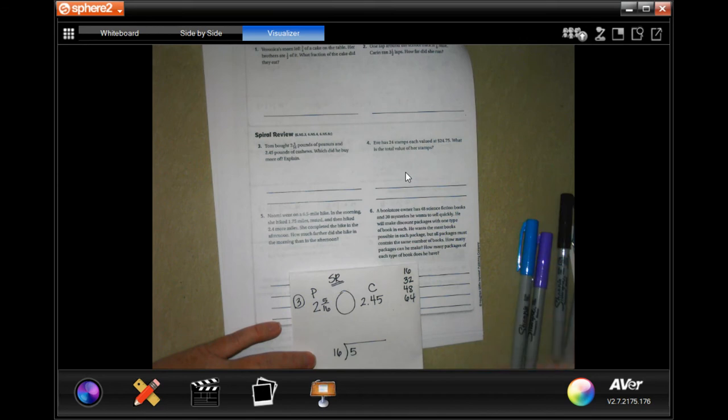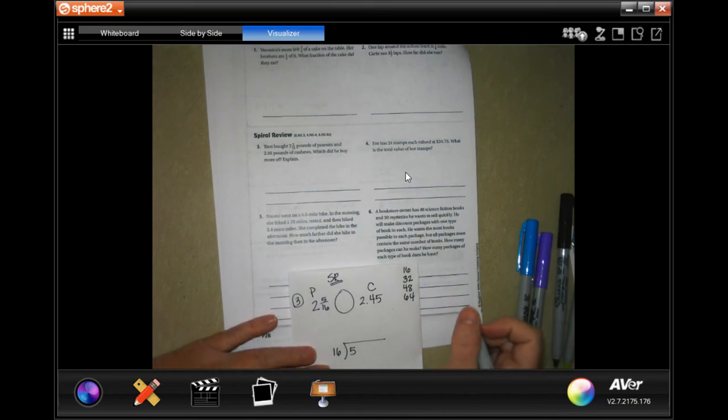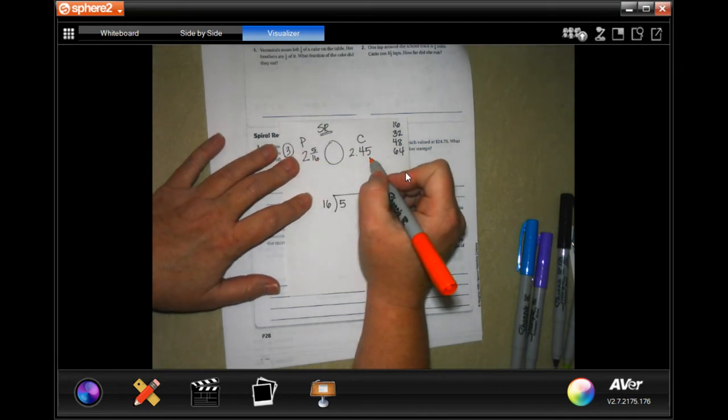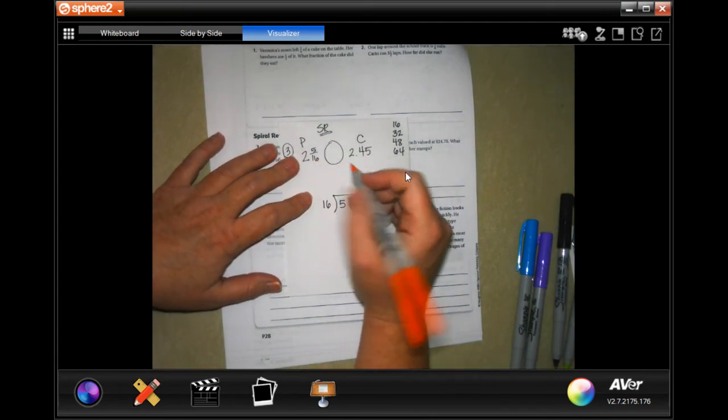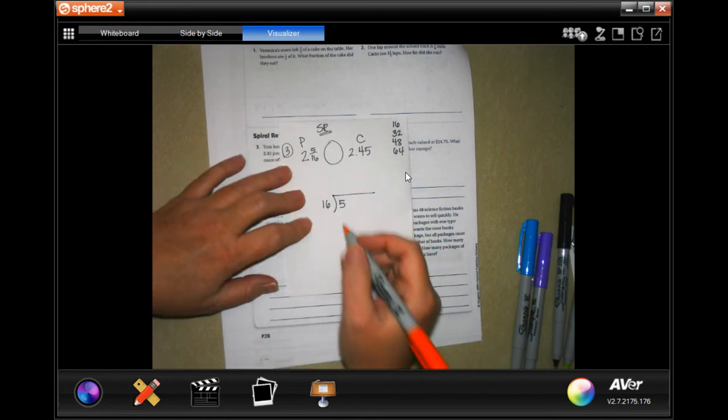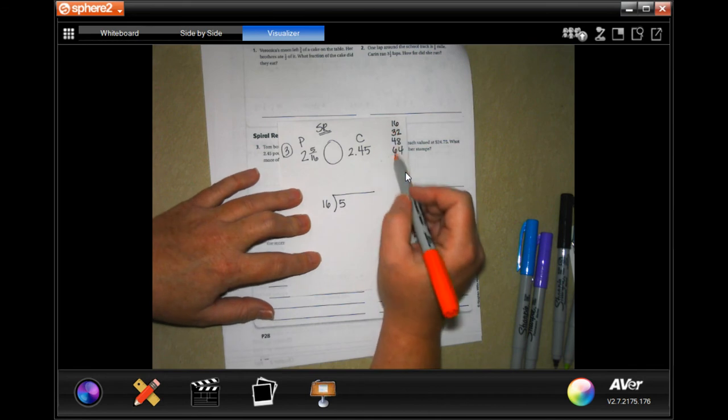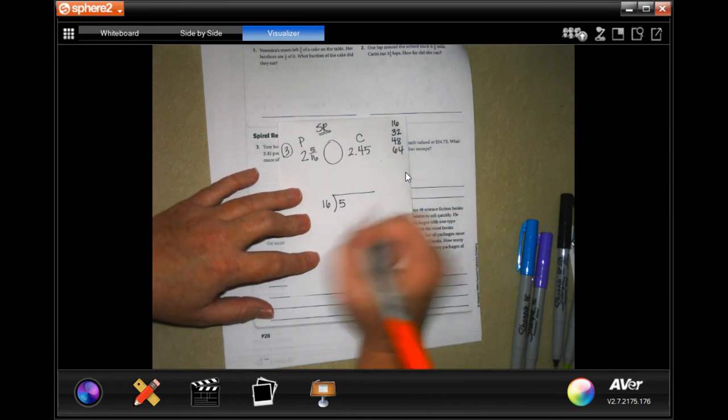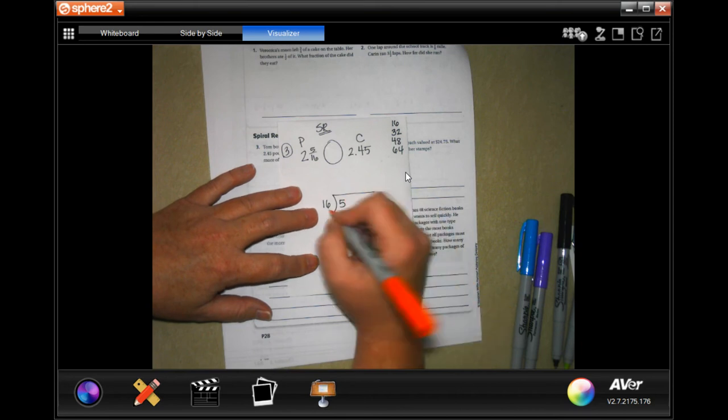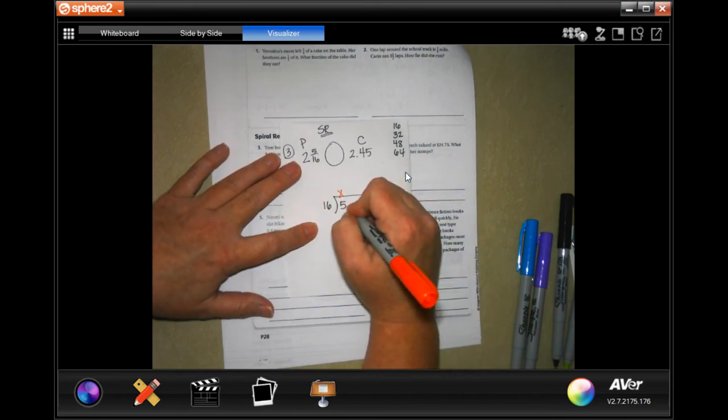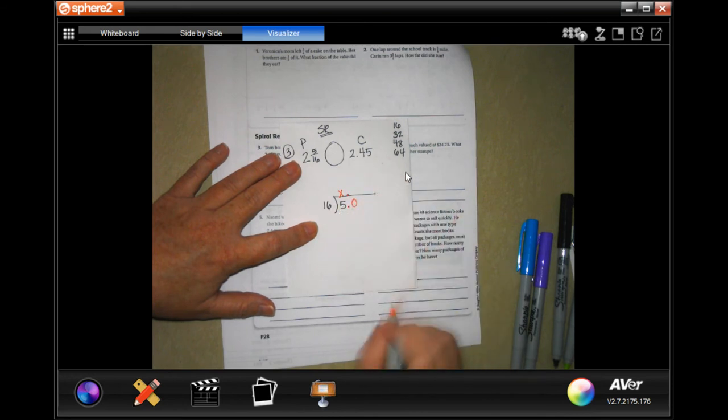Spiral Review says, Tom bought 2 and 5/6 pounds of peanuts and 2.45 pounds of cashews. Which did you buy more of and explain? In order to compare them, I have to make them both fractions or both decimals. It's easier to make them into decimals. I put the 5 inside the box, the 16 out. I wrote multiples of 16 over here just so that I have them. 16 is not going to go into 5, placeholder. But now decimals, 0.